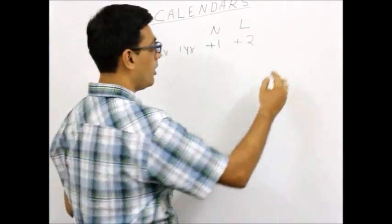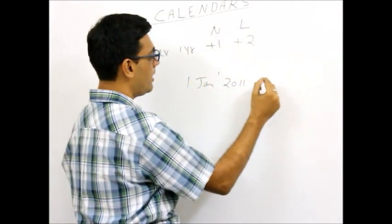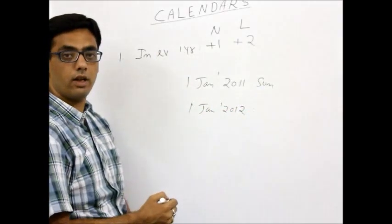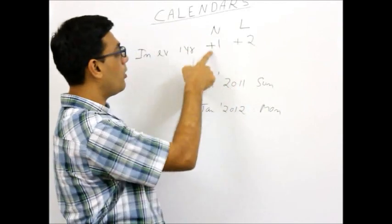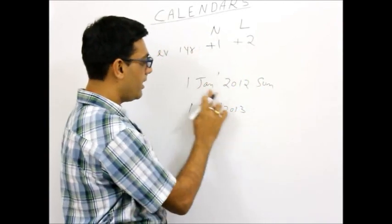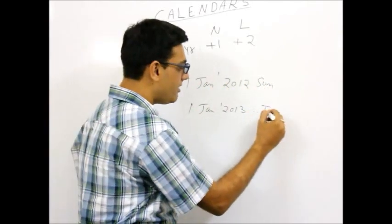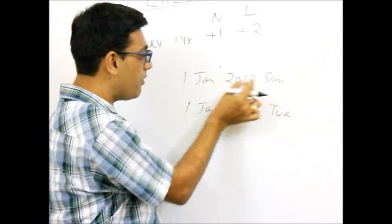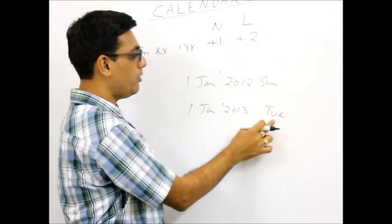So if we are crossing a leap year: if 1st of January 2011 is Sunday, then 1st of January 2012 is Monday — because we are crossing exactly 1 normal year, plus 1. But if 1st of January 2012 is Sunday, what is 1st of January 2013? The answer is Tuesday, because 29th February 2012 must have come in our path — we are crossing a leap year. The rule is plus 2, so Sunday plus 2 gives Tuesday.